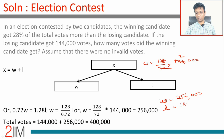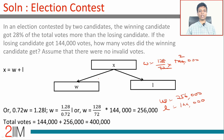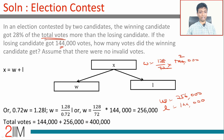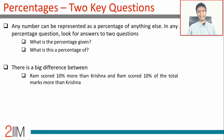The losing candidate got 144,000. From this we can find the total number of votes, the difference between the votes, the sum of the votes — all of that. The critical distinction: in the first question, the winning candidate got 28% more votes — 28% of whatever the losing candidate got. In the second question, 28% of the total votes more than the losing candidate, so the winning candidate gets L plus 28% of X. That's a very important distinction.